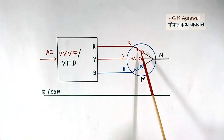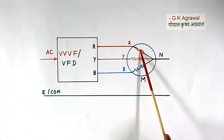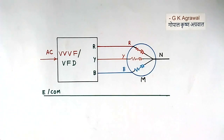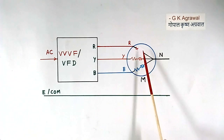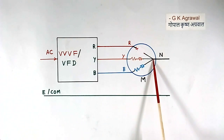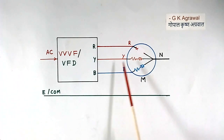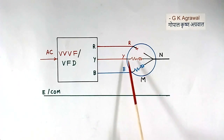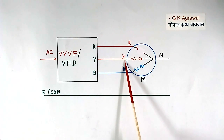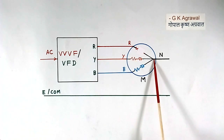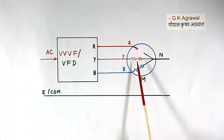Now suppose this winding gets opened — it is open now. The voltage of this neutral point will be in the middle of the remaining two phases, like this. You see, it is connected between Y and B, so this voltage will change.